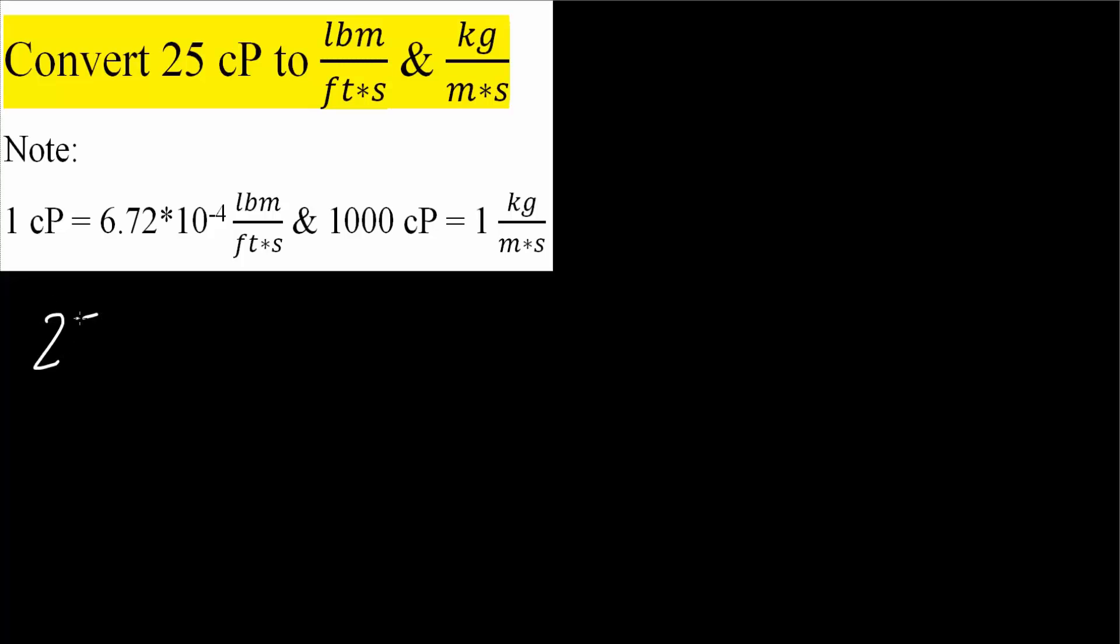So we have 25 centipose and we want to convert to this unit. So this is a conversion for that. So 1 centipose is equal to this number right here, 6.72 times 10 raised to negative 4 pound mass divided by feet times seconds.